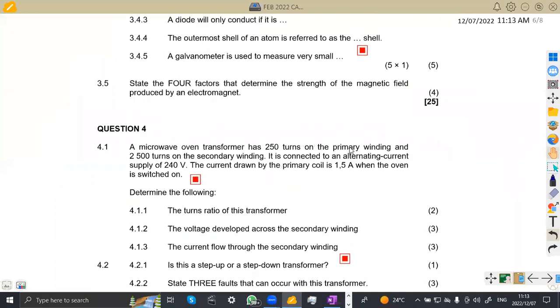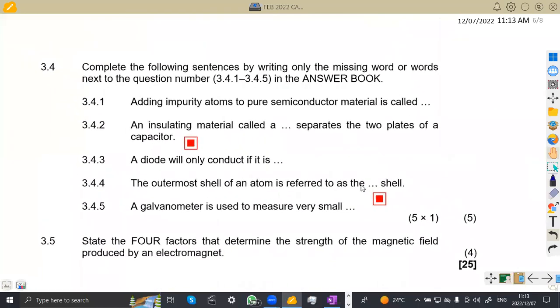Let's check the other part of the question, which is 3.4, where we are asked to complete the following sentences by writing only the missing word or words. 3.4.1, adding impurity atoms to pure semiconductor material is called doping. If you checked question number one, this question is repeated. They asked this question, now it's repeating again.